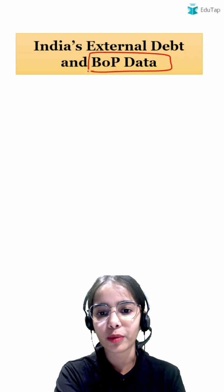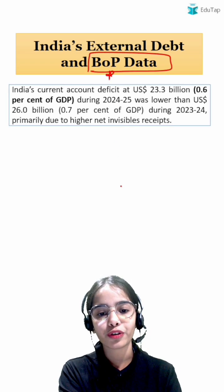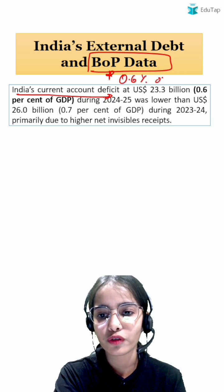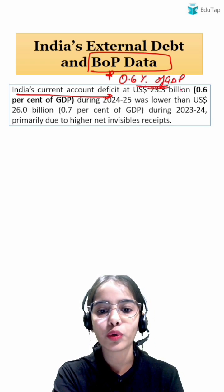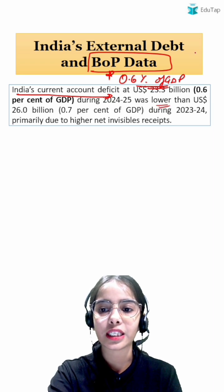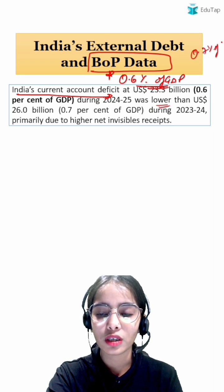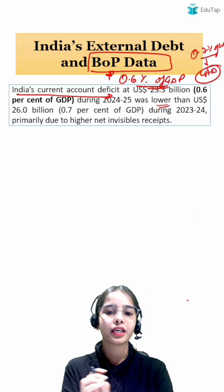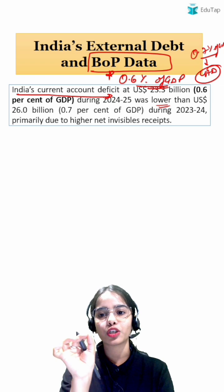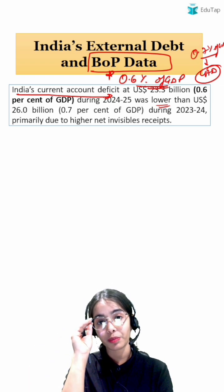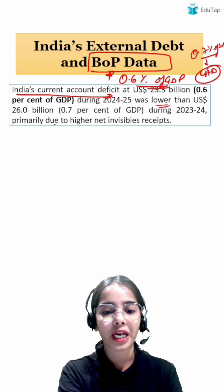Coming to the important data points from the balance of payment point of view: India's current account deficit was 0.6% of GDP in the 2024-25 financial year. This was lower than the 0.7% of GDP current account deficit recorded in 2023-24. So India's current account deficit has decreased from 0.7% to 0.6% of GDP in 2024-25.